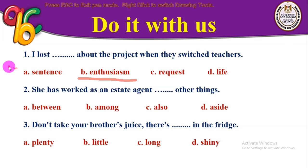Enthusiastic is an adjective meaning excited. Number two: 'She has worked as an estate agent, among other things.' The choices are between, among, also, or aside. The correct answer is among — since it involves multiple things, we use among.